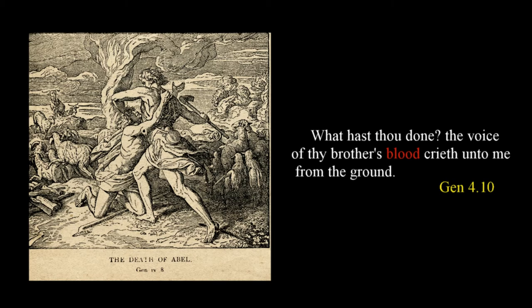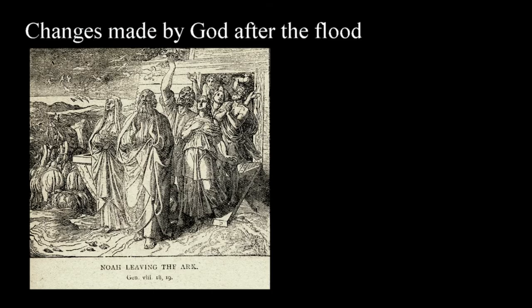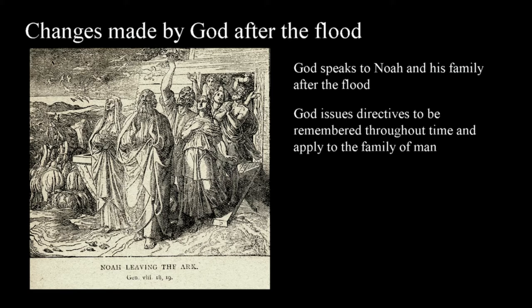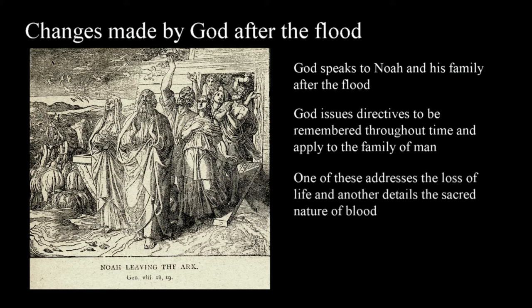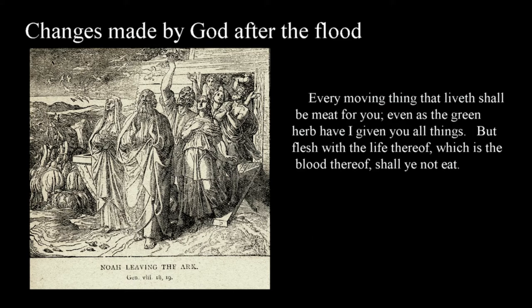The fact that God intervenes, confronts Cain, and brings the blood to the forefront tells us that the presence of blood — and therefore life — is sacred. Moving forward a few chapters, we find the sanctity of life and therefore blood made even clearer after the flood recorded in Genesis chapters 6 through 9. God speaks to Noah and his family as they emerge from the ark, issuing directives to be remembered throughout time. God states 'every moving thing that liveth shall be meat for you, even as the green herb have I given you all things, but flesh with the life thereof, which is the blood thereof, shall ye not eat' in Genesis 9:3-4.